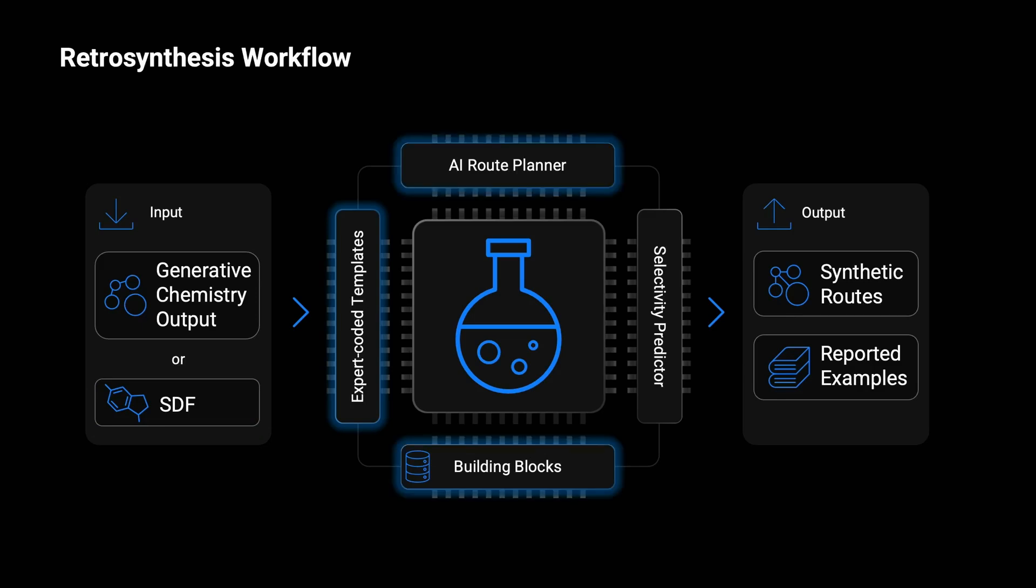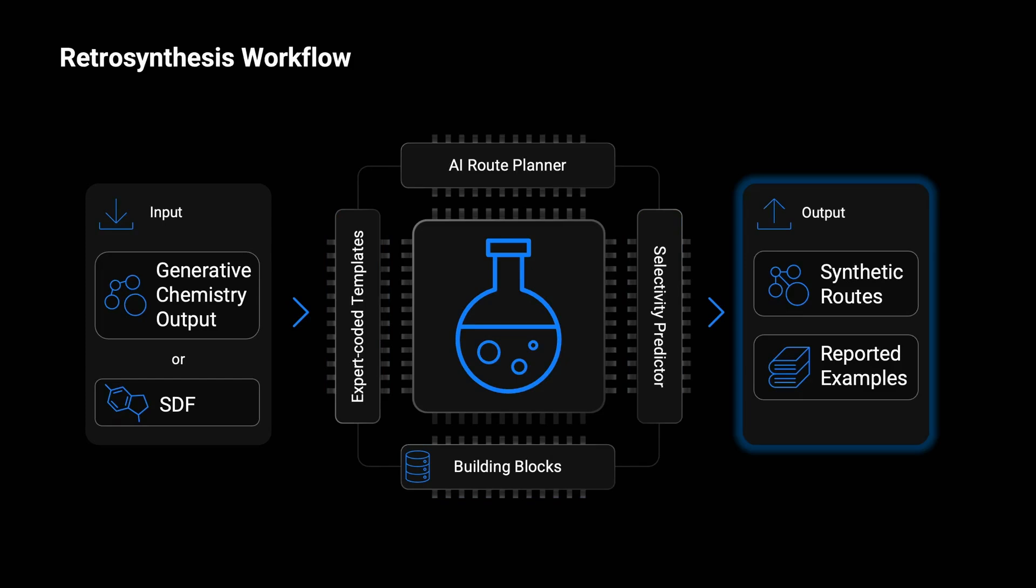Using the AI Route Planner module, it pinpoints the most optimal routes while considering many factors, including functional group compatibility, physiochemical properties, reactivity and selectivity. This results in logical synthetic routes that match reported examples.